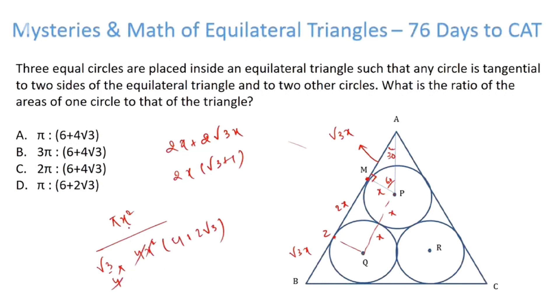So if we get x square cancelled here, this becomes pi upon 6 plus 4 root 3. So answer option A.